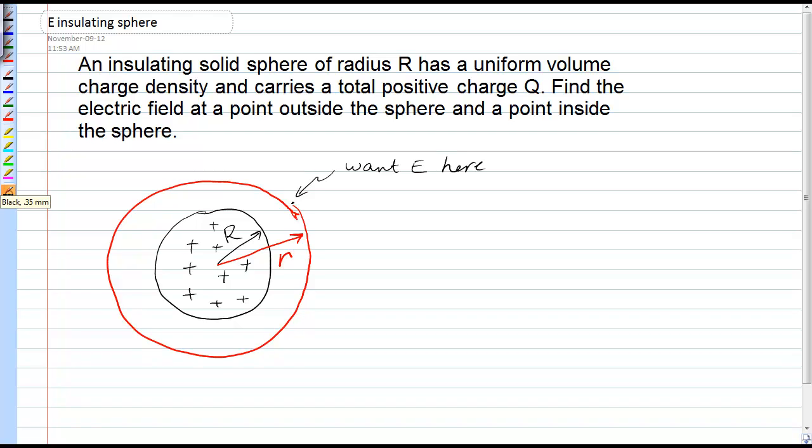So, the working form now of Gauss's Law is that the magnitude of the electric field is equal to the charge inside the Gaussian surface over the area of the Gaussian surface times epsilon naught.